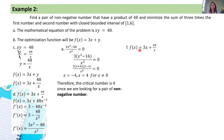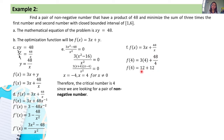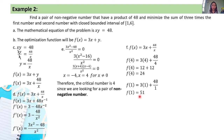Step 6: evaluate f(x) = 3x + 48/x at the critical number and interval endpoints. f(4) = 3(4) + 48/4 = 12 + 12 = 24. f(1) = 3(1) + 48/1 = 3 + 48 = 51. f(6) = 3(6) + 48/6 = 18 + 8 = 26.